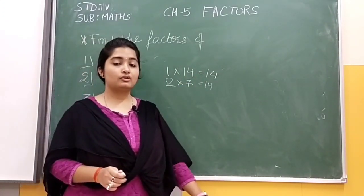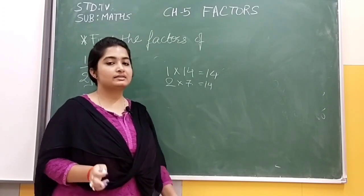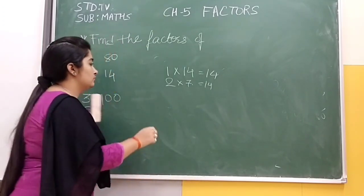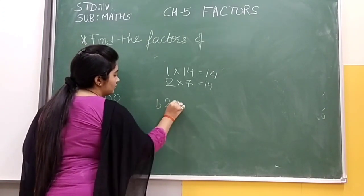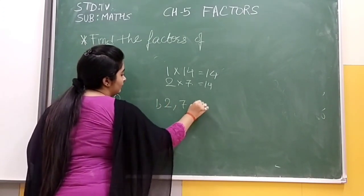After that, no other number's multiplication gives 14. So factors of 14 will be 1, 2, 7, and 14.